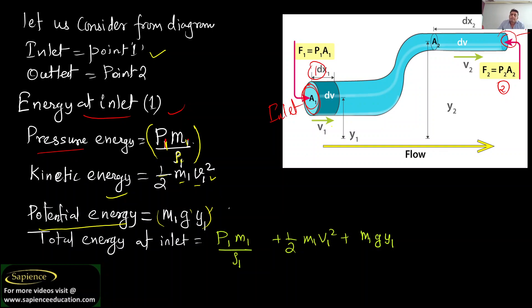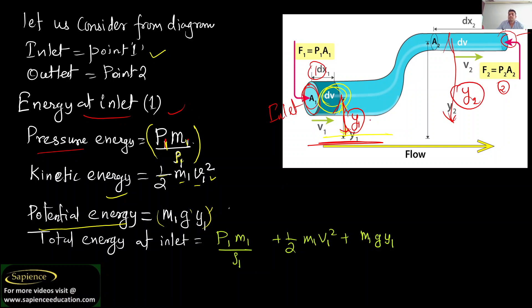The inlet section is at height y1 and the outlet is at height y2. Potential energy is m·g·h, so at inlet it is m1·g·y1. Adding pressure energy, kinetic energy, and potential energy at inlet gives: P1·m1/rho1 + half·m1·v1² + m1·g·y1. This is the total energy at inlet.